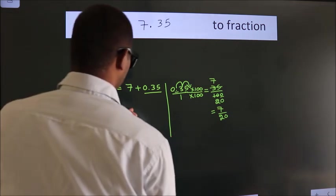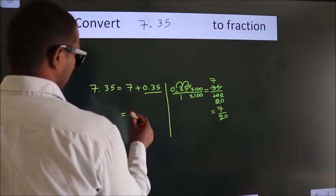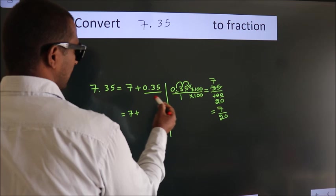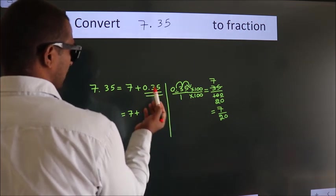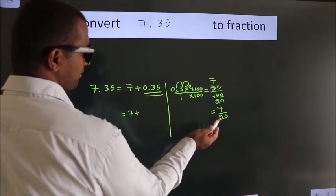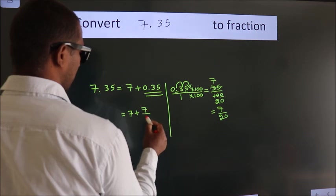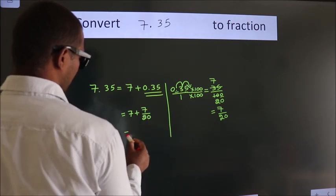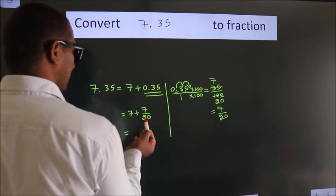Now here, 7 plus, in place of 0.35, we write this fraction 7 by 20. So 7 plus 7 by 20.